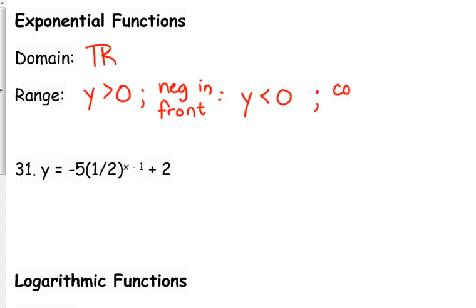So if there's a constant on the end, then it's either going to be y > c or y < c, depending on the positive or negative in front.